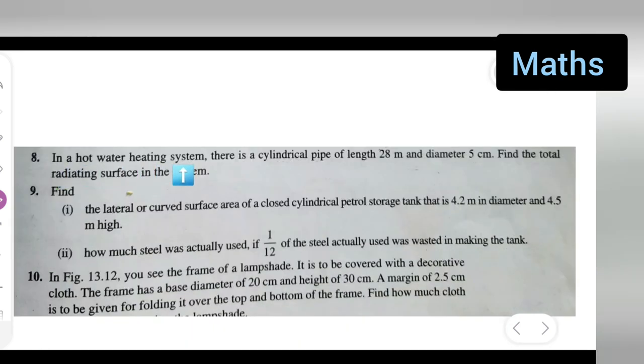In a hot water heating system there is a cylindrical pipe of length 28 meter and diameter 5 centimeter. Find the total radiating surface in the system.